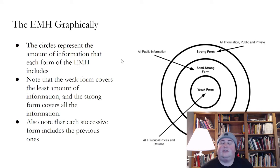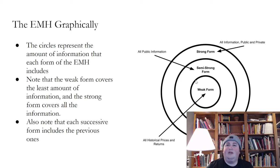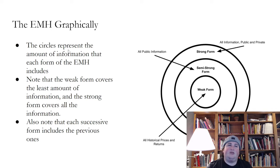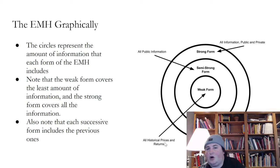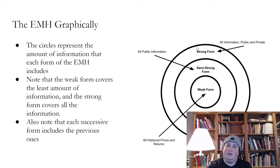These concentric circles show you basically the weak form, which is the smallest circle, based on historical prices and returns. The circle represents the amount of information that each form of the EMH includes. The weak form covers the least amount of information, and the strong form, the biggest circle, covers all the information. The semi-strong form is all public information, and then the biggest one is all information — public and private.